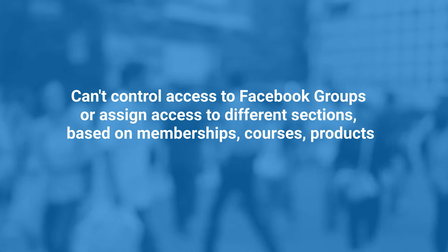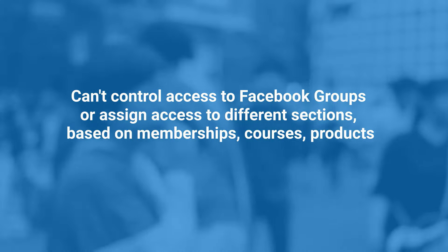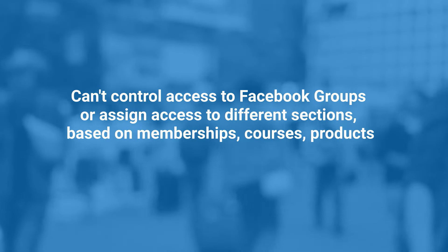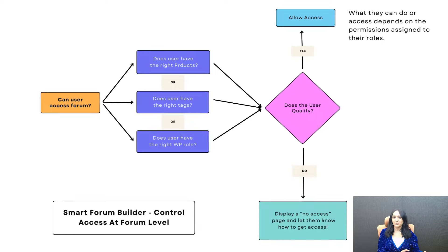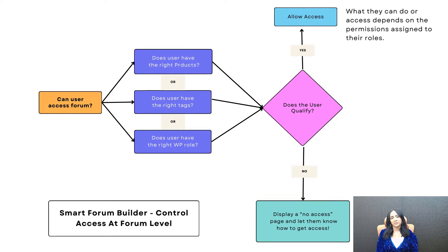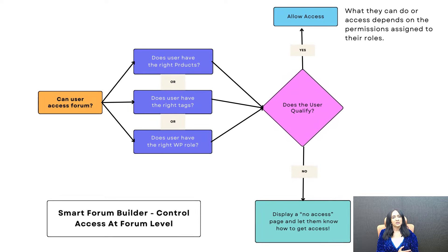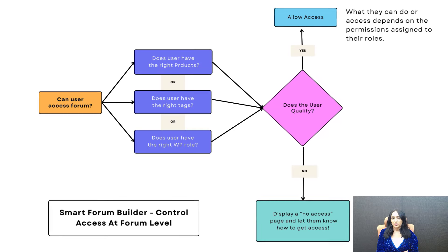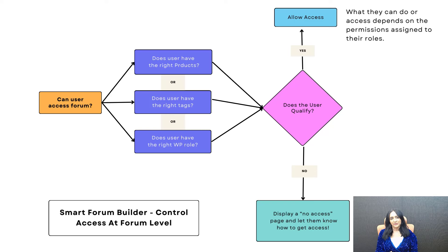Also, if you have Facebook groups, how do you control access? How do you say, if someone has access to this membership level, this course, or this product, they get access to a specific area? There's no way to do that. But with SFB, you can decide who gets access to which forum. You can create private forums, you can create public forums, and even within private forums you can say only those with access to a specific product, course, membership, user role — only they can access it. You can control access at a granular level. You cannot do that with a Facebook group.